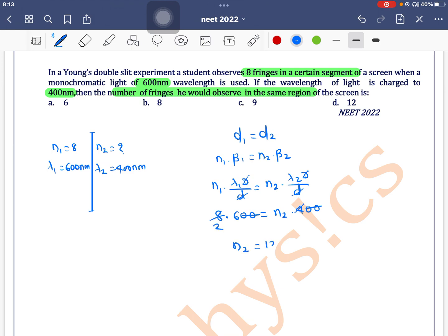n2 is equal to 12. In the same region we will find 12 fringes. Option D is the correct one.